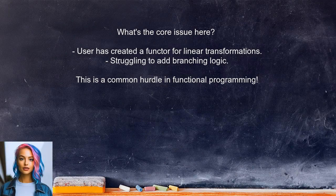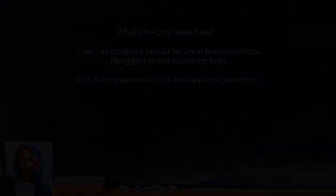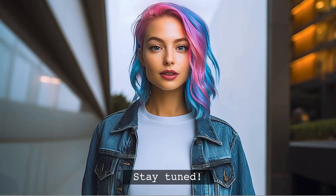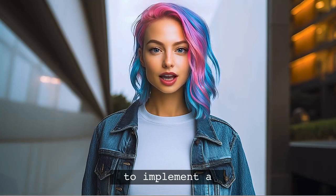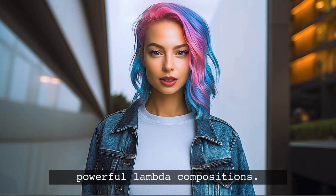So, what's the core issue here? The user has created a functor that allows for linear transformations, but is struggling to add branching logic. This is a common hurdle when working with functional programming, especially when trying to maintain immutability. By the end of this video, you'll have a clear understanding of how to implement that branch method, and it will make your lambda compositions much more powerful.